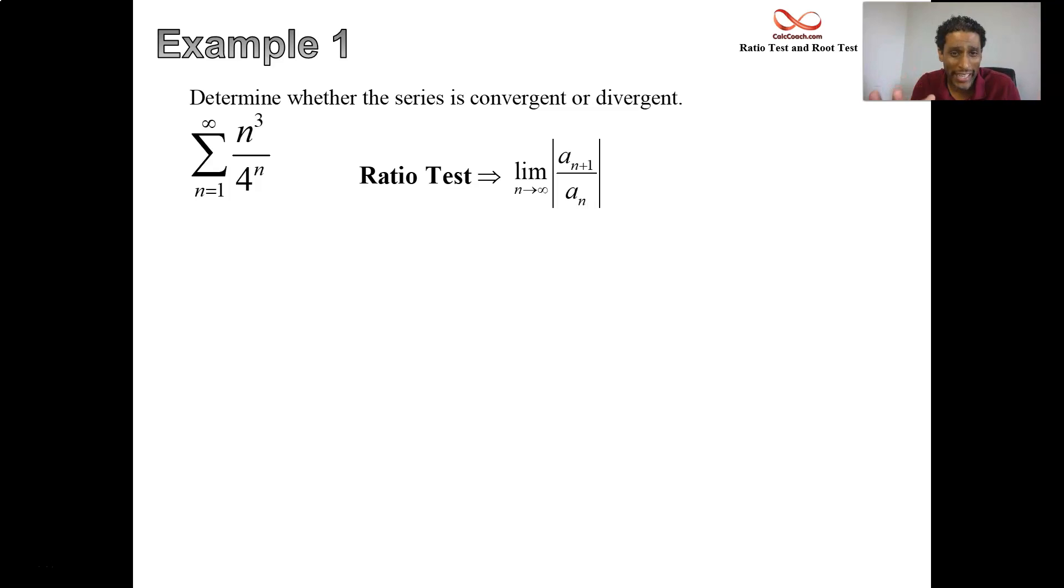I first want to show you how bad it is just writing it out. You have to replace all the n's with n plus 1's. That's the numerator. Then you take the original terms, a sub n, you put that in a denominator. Instead of dealing with this mess of a fraction, a fraction on top of a fraction and underneath there's a fraction, instead of dealing with that mess, here's how I want you to handle these problems.